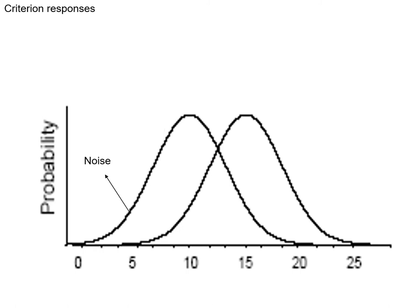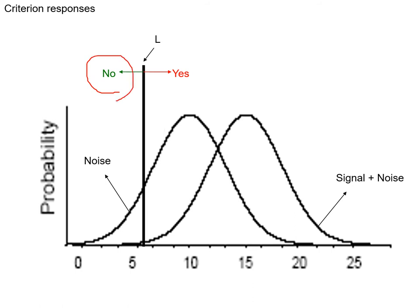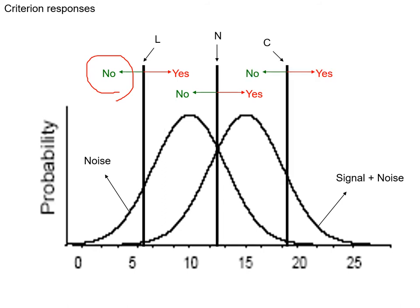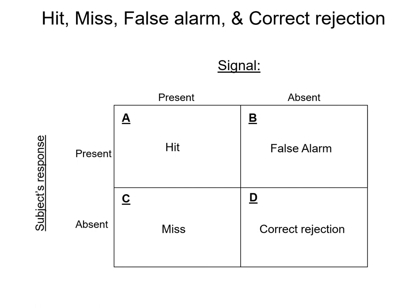The left bell curve is noise only; the right is noise plus signal. A liberal person says yes about 90% of the time whether they see noise only or signal plus noise. A neutral criterion splits 50/50, and at the conservative extreme, the person is very likely to say no unless they're absolutely sure the signal is present.